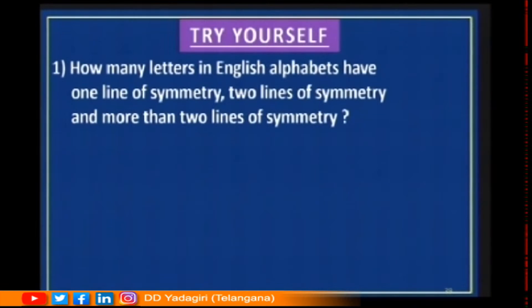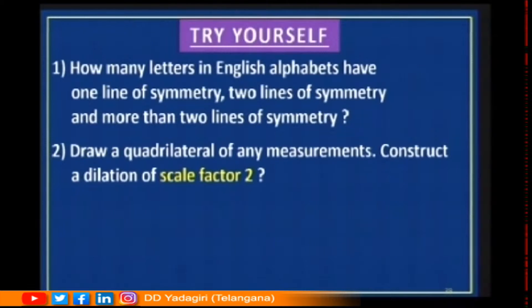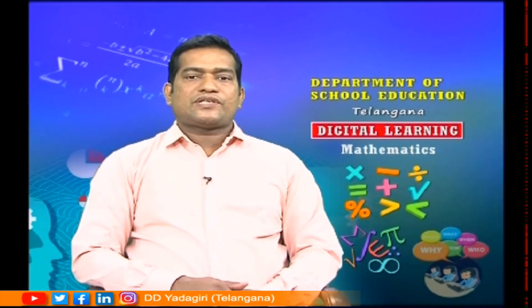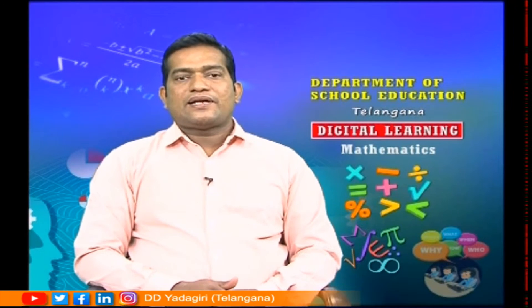Try yourself: how many letters in the English alphabet have one line of symmetry, two lines of symmetry, and more than two lines of symmetry? Also, draw a quadrilateral of any measurements and construct a dilation with scale factor two — draw four rays from the center and apply the scale factor. Draw any two tessellations and name the basic shapes used. For better understanding, solve the worksheets on the official website of SCRT. Today you learned about similar figures, congruent figures, dilation, tessellation, and types of symmetry. In our next session we will meet with a new concept.